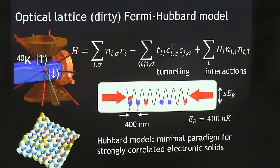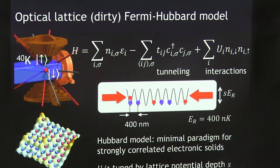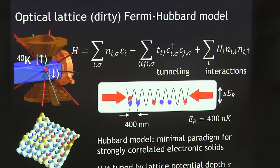It's that minimal paradigm for strongly correlated electronic solids that many of us are studying these days. The atoms can do exactly two things in there: they can tunnel, which sets that tunneling energy T, and then they interact with low energy collisions which sets that U, the interaction energy. We tune that ratio U over T by tuning the lattice potential depth, which we make larger by putting more power in these laser beams. Those barriers get larger, tunneling energy shrinks, and the interaction energy grows. There's also a nice Feshbach resonance so we can tune the scattering length using that Feshbach resonance.